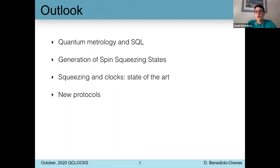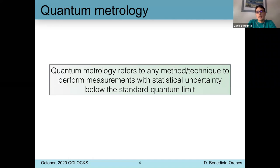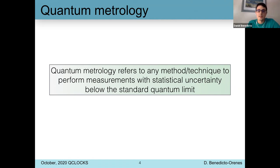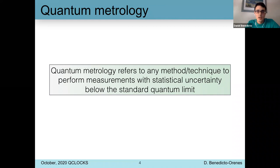I will show some very preliminary results that we got. Let's start with the first question: what is quantum metrology? To me, quantum metrology refers to any kind of metrological tool or technique that allows us to improve the statistical uncertainty of a physical measurement below the standard quantum limit. The standard quantum limit is a rather generic term that refers to the quantum limitations that constrain the measurement of an observable in a physical system — we've already seen what this is in the context of atomic clocks in the previous talk.